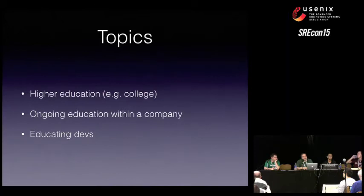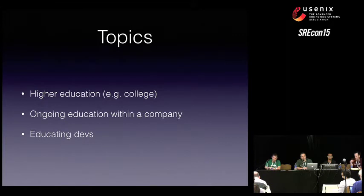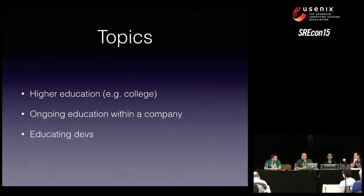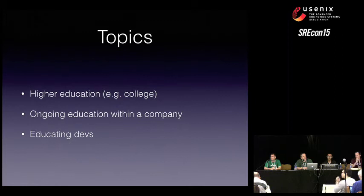The topics I want to cover are higher education and where it basically falls short. There are great computer science degrees throughout the world. Computer science wasn't a major degree until the 1960s — it was a branch of applied mathematics. Now there are multiple branches within computer science, and one could argue that SRE is becoming a bigger branch. So where can we improve on what college offers? I use 'college' as a general term — I mean higher education, not just a standard four-year university degree.